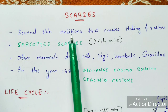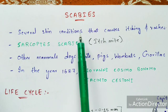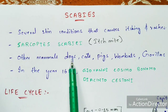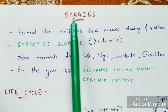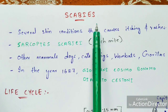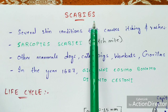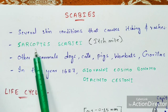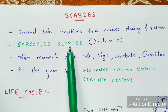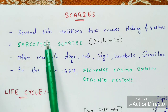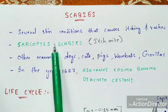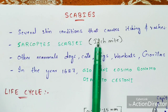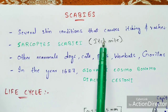Scabies is a disease which causes several skin conditions including itching as well as rashes. Scabies is mainly caused by a parasitic mite known as Sarcoptes scabiei — that is the scientific name — and it is commonly called as itch mite.